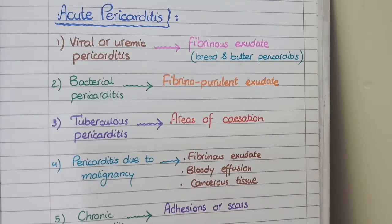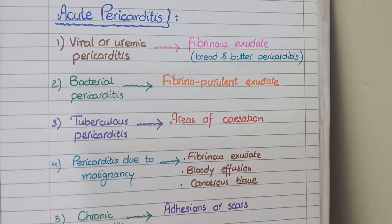Finally, in cases of chronic pericarditis, you will see adhesions or scars present in the pericardium, because scar formation or fibrous tissue formation is a feature of chronic inflammation.